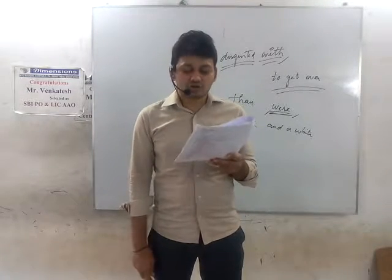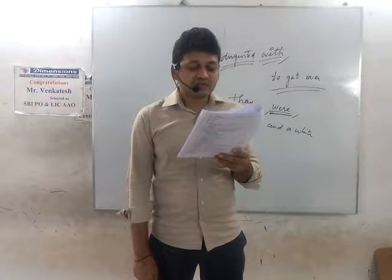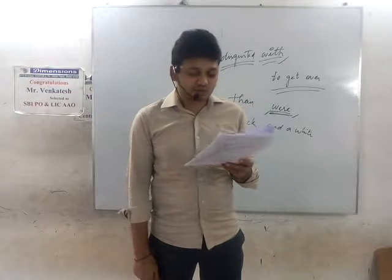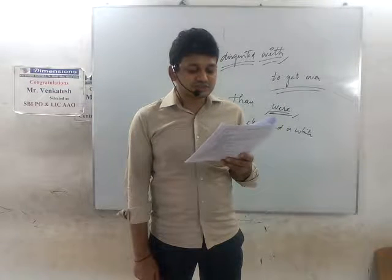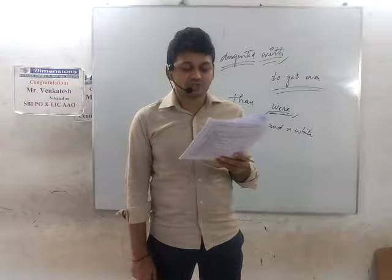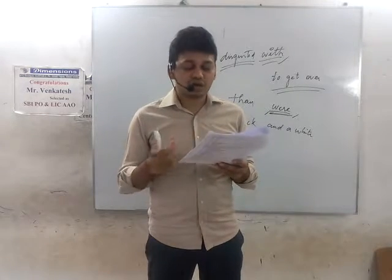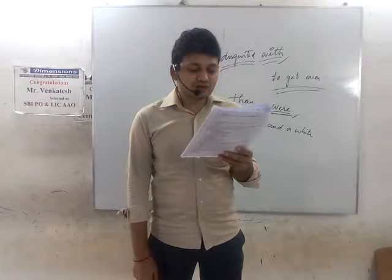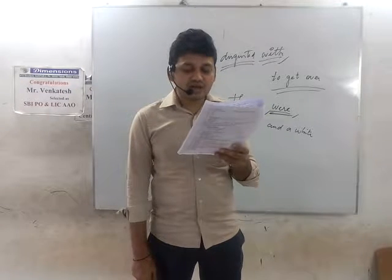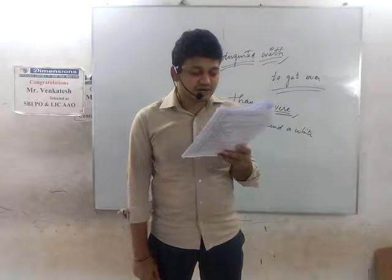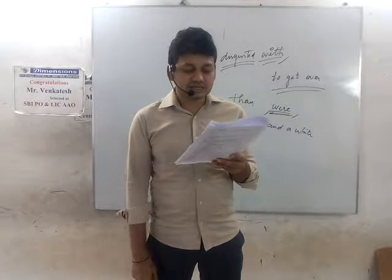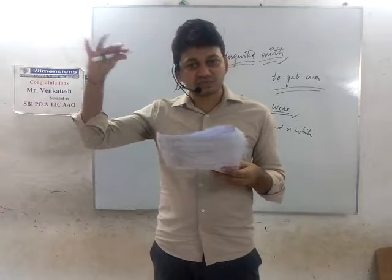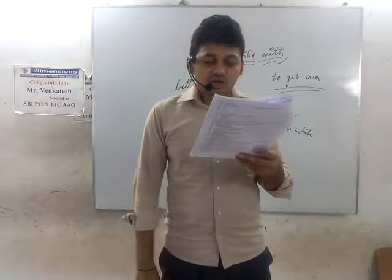The passage is titled 'Tryst with Destiny' — 'tryst' means a private encounter. It was a speech delivered by Jawaharlal Nehru, the first Prime Minister of India, to the Indian Constituent Assembly on 14th August 1947. It is considered one of the greatest speeches of all time and a landmark piece of oratory capturing the triumphant culmination of India's largely non-violent independence struggle.